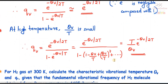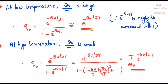At high temperature, θ_v/kT is small. The denominator term can be expanded as 1 − θ_v/kT + (θ_v/kT)² + ..., which approximates to θ_v/kT, giving q_v ≈ (T/θ_v) × e raised to minus θ_v/2T. These two equations show how the vibrational partition function can be expressed at low and high temperatures. In this class, we have seen how to derive the expressions for vibrational partition function for diatomic molecules, linear polyatomic molecules, and non-linear polyatomic molecules.